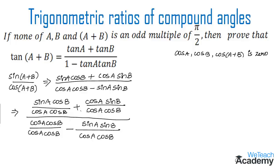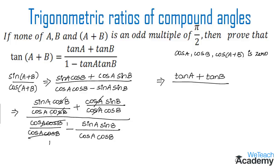By simplifying, cos b in the numerator as well as in the denominator gets cancelled, and cos a gets cancelled. In the denominator, cos a cos b in the numerator as well as denominator cancel out, and there are no remaining terms to cancel. So we get sin a over cos a, which is tan a, plus sin b over cos b, which is tan b, divided by 1 minus sin a over cos a times sin b over cos b, which is tan a tan b.